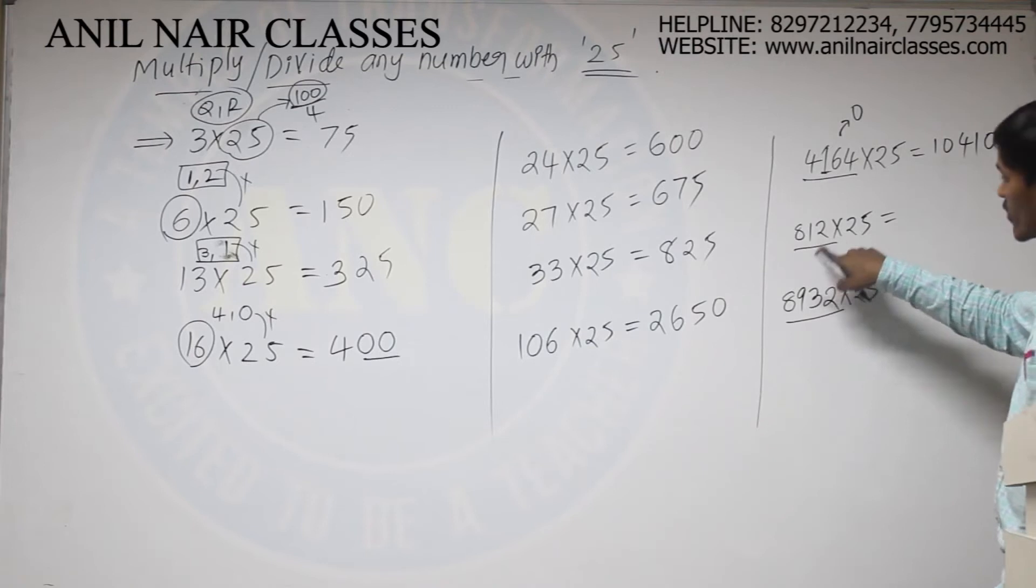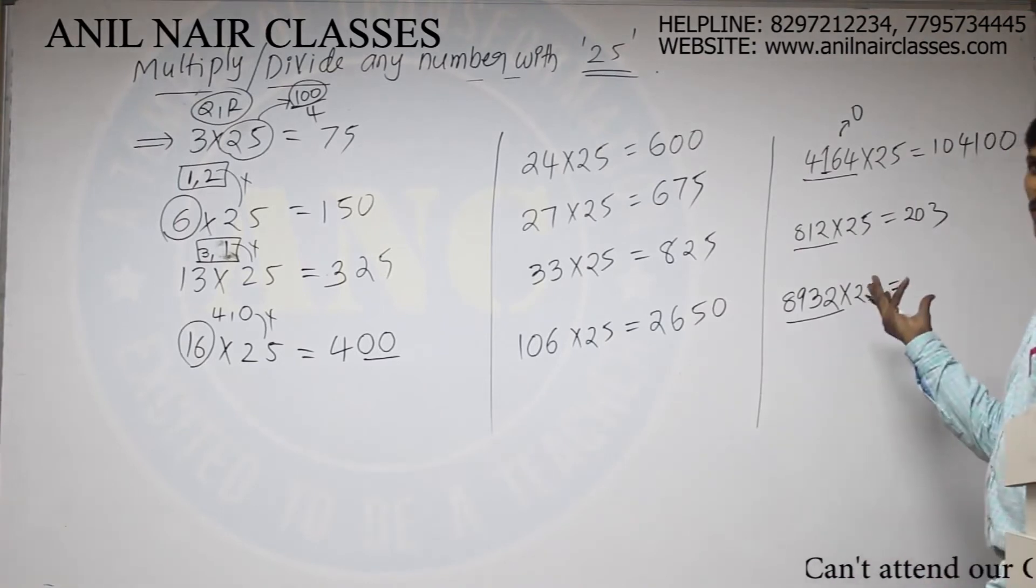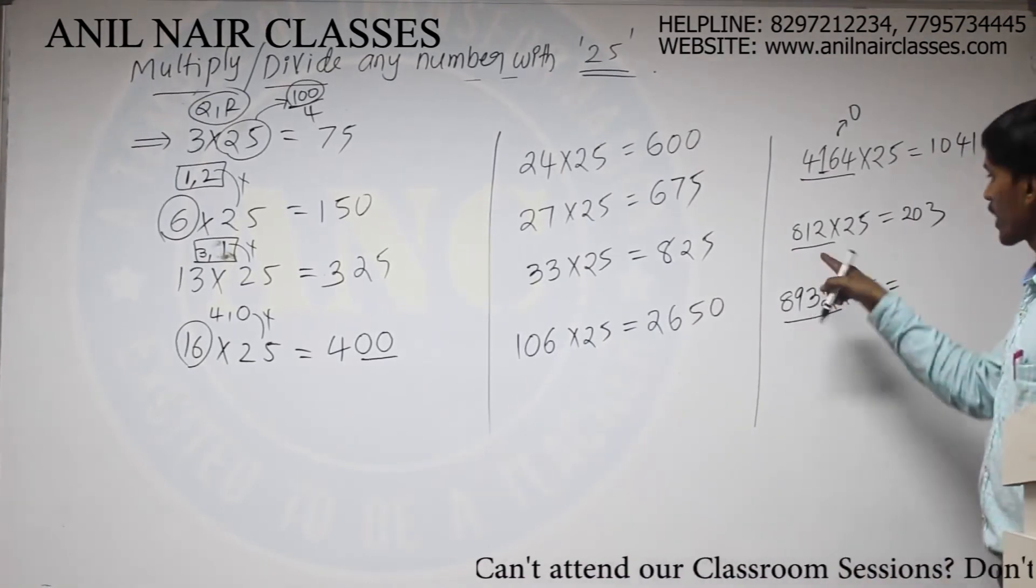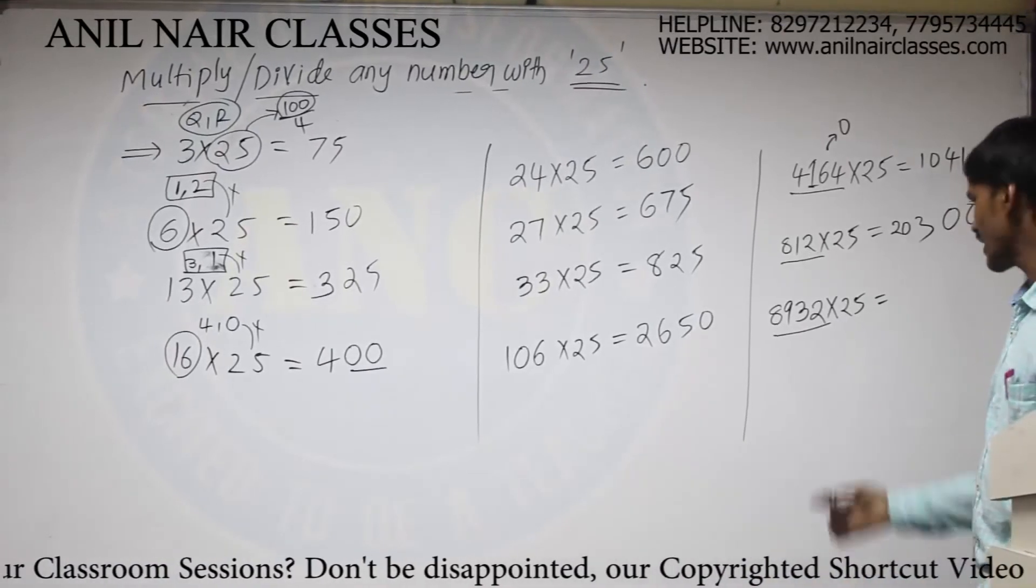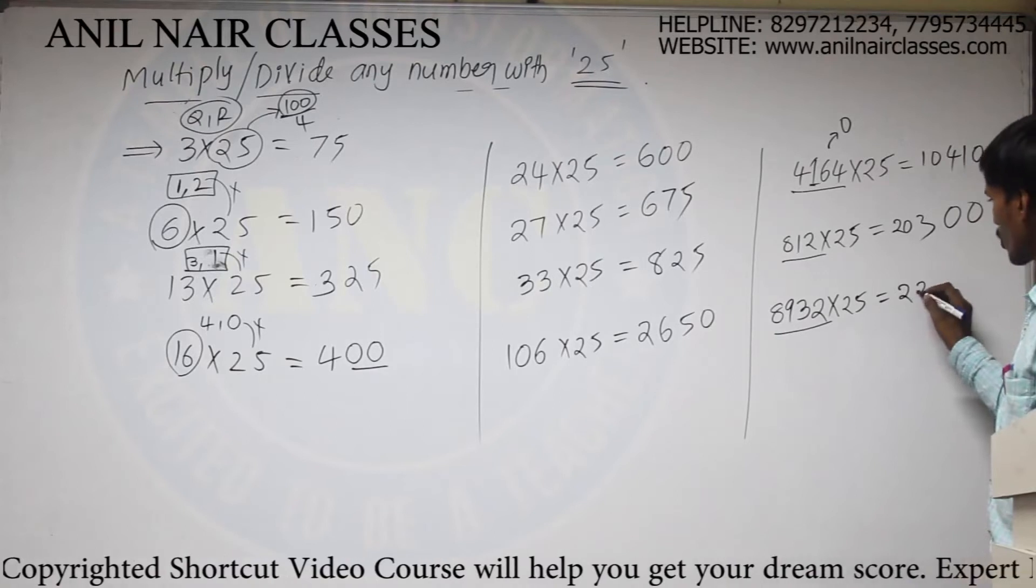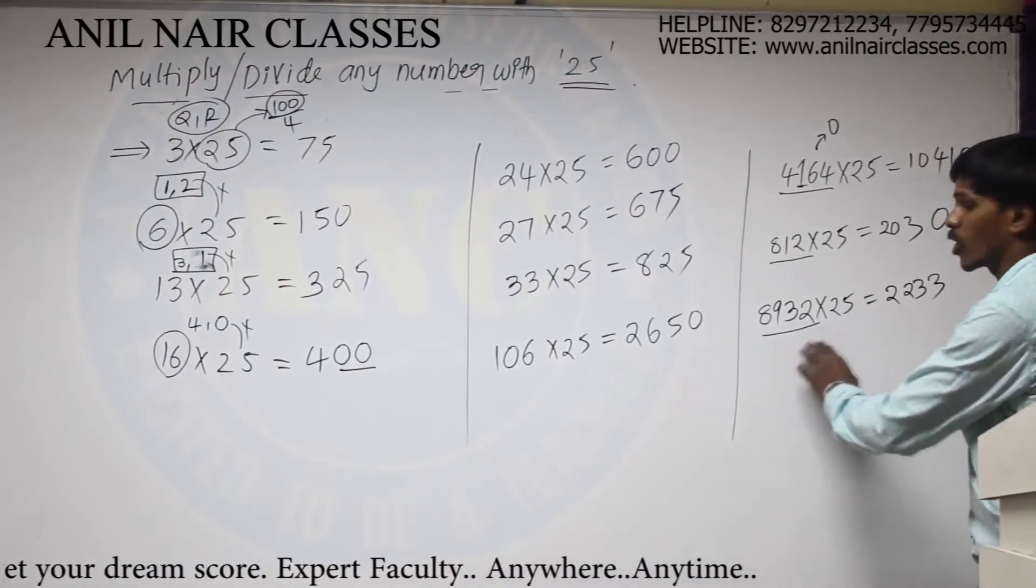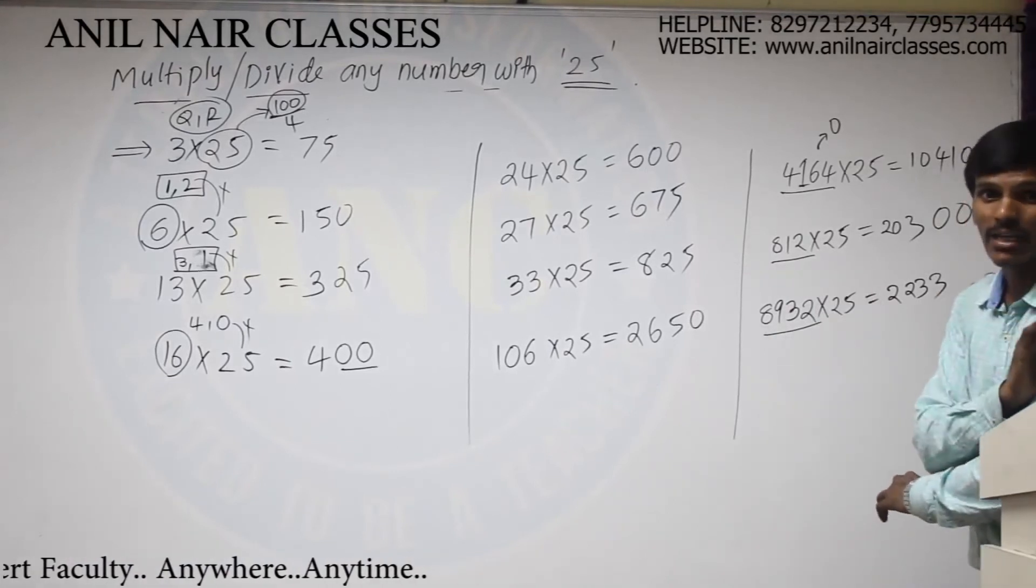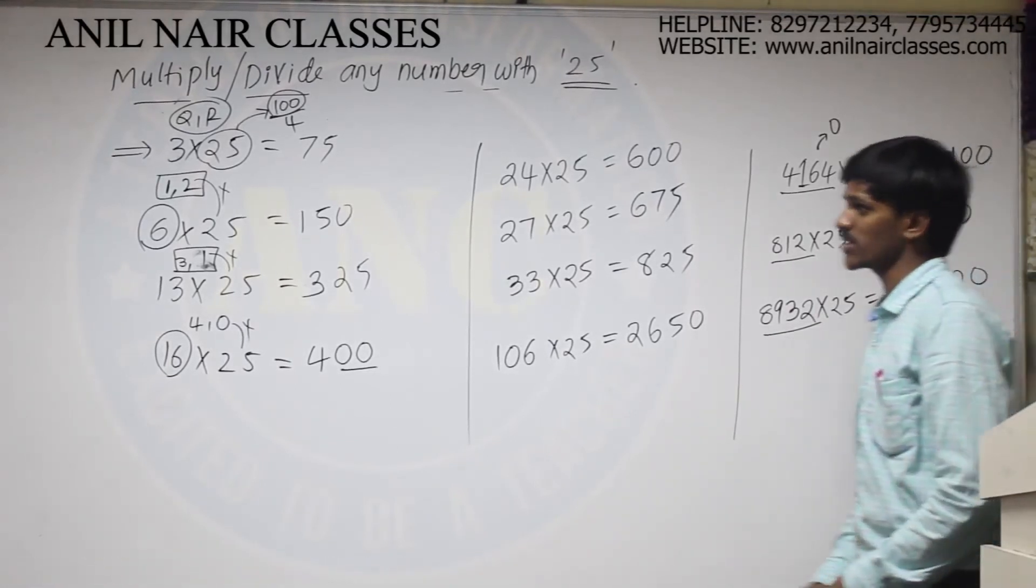And here also, divide this number with 4. How many times it will get cancelled? It will get cancelled for 203 times. There will be no remainder. So, add 2 0's. And here also, divide this number with 4. So, 4×173 are 692. It is divisible by 4 perfectly. Means, there won't be any reminder. So, add 2 0's.